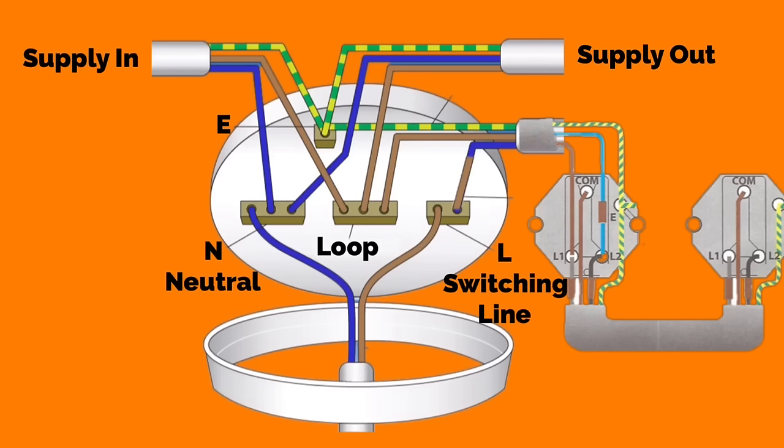When working in ceiling roses and pendants in domestic dwellings, you may also be faced with cable colours pre-2004. Pre-2004, the line conductor was red, the neutral conductor was black and as it still is, the circuit protective conductor was identified with green and yellow sleeving.